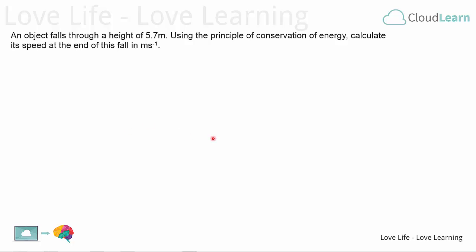Hi, we're going to have a look at a typical problem you might come across in physics where you're told simply that an object falls from a certain height and you've got to work out its final speed. In this case it's falling from a height of 5.7 metres but that's largely irrelevant.